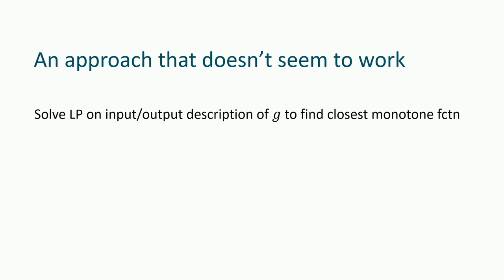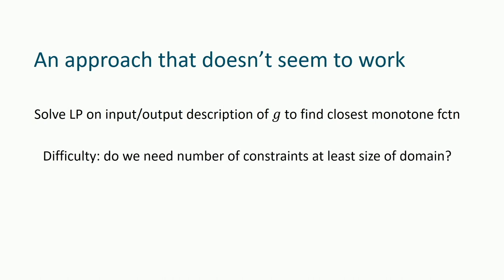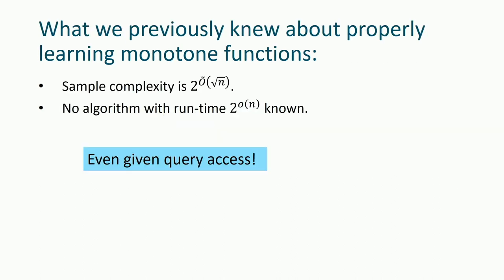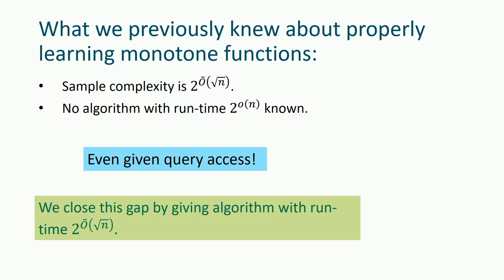The difficulty is we need something where the number of constraints is significantly smaller than the size of the domain. What we show is an algorithm that runs in 2^{O-tilde(sqrt(n))}, which is essentially optimal due to a lower bound by Blais et al., given query access.